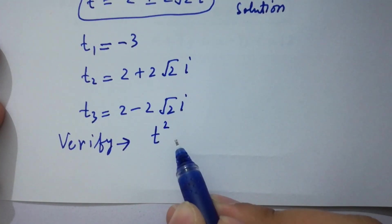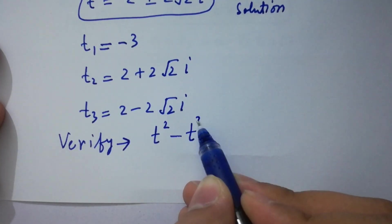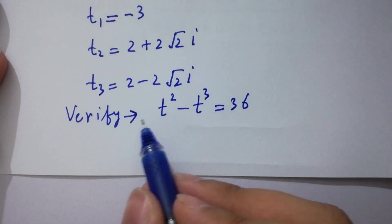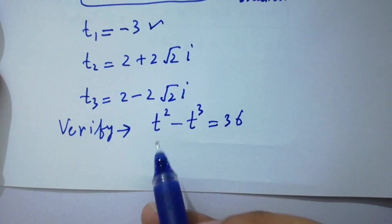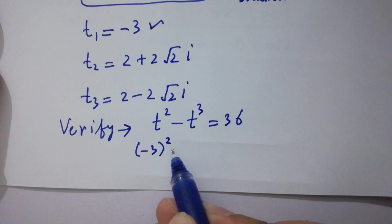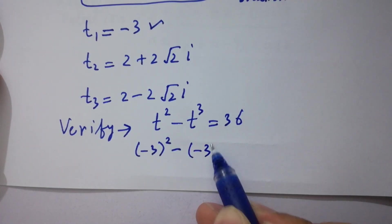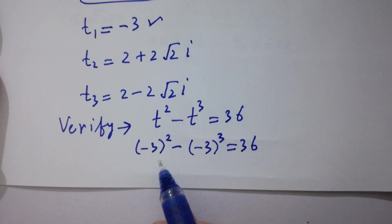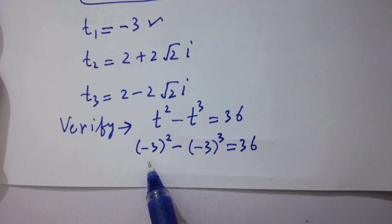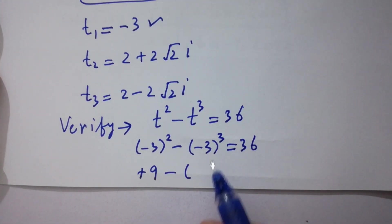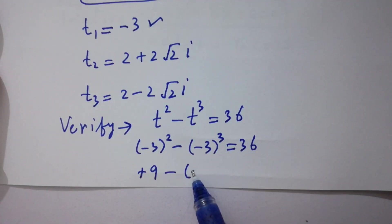Verifying t-squared minus t-cubed equals 36. Put in the value t equals minus 3: we have minus 3 squared minus minus 3 cubed equal to 36. Since the exponent 2 is even, minus 3 squared is plus 9. Since 3 is odd, minus 3 cubed gives minus of minus 27, which is plus 27.